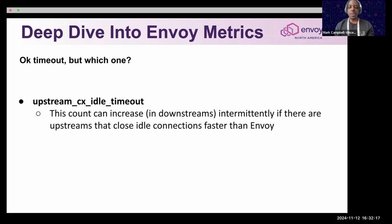This one can be a bit more niche because it can show as intermittent in the metrics, but the upstream_cx_idle_timeout is a metric you can check on both downstream and upstream to see how they are aligned.